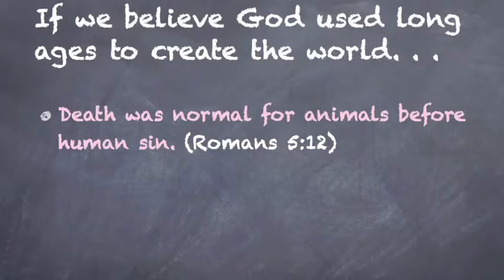If we believe the earth is really old, this is what we have to believe. If we believe the earth is really old, we have to believe that death was normal for animals before human sin. I'll say it again. If my Christian brothers, who say the earth is really old, if they are true, they must also say that death happened before sin. That's what they have to agree. And they do. They say, yeah, there was death before Adam. When Adam sinned, only humans began to die. Animals died for millions of years before Adam and Eve sinned.